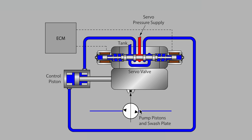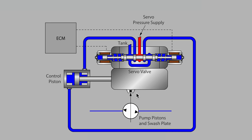The internal pumping elements — the rotating group made up of pistons in a cylinder barrel — are shown here using the simplified circle symbol. The long arrow cutting through represents the swashplate in the piston pump. Changing the position of the swashplate will represent changes in flow direction and flow volume.